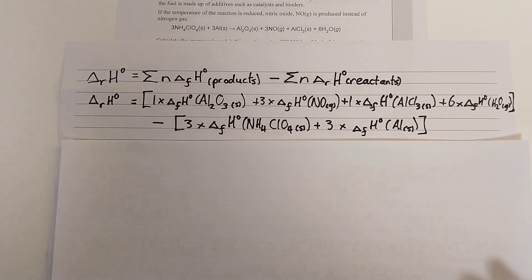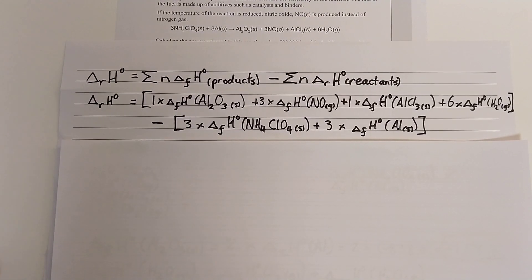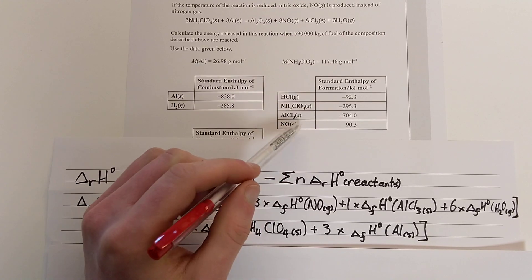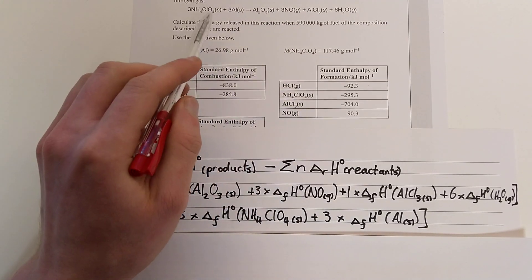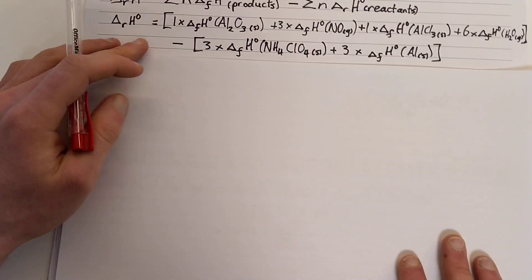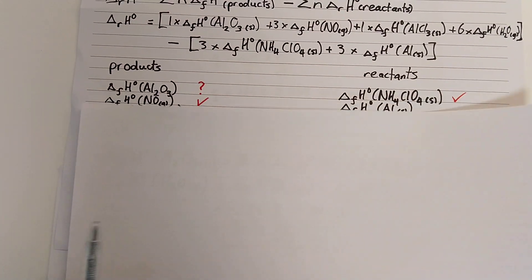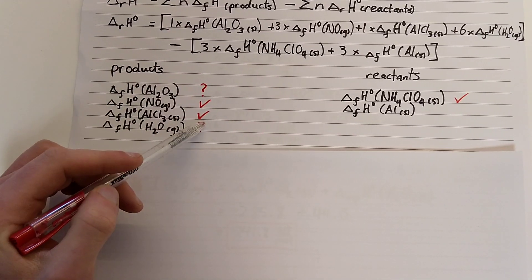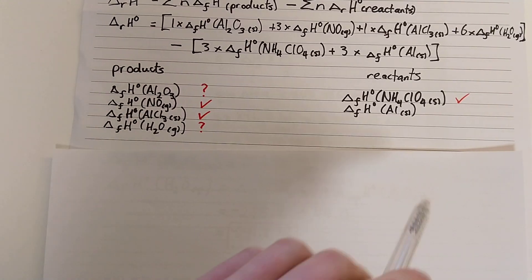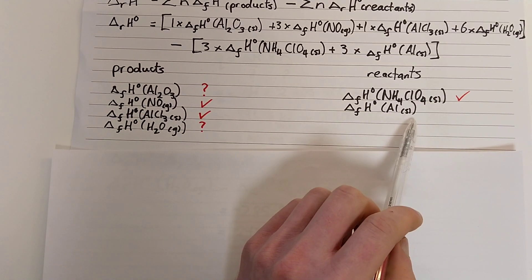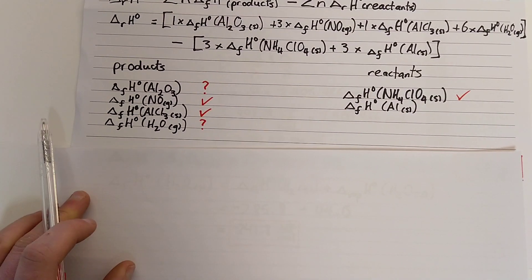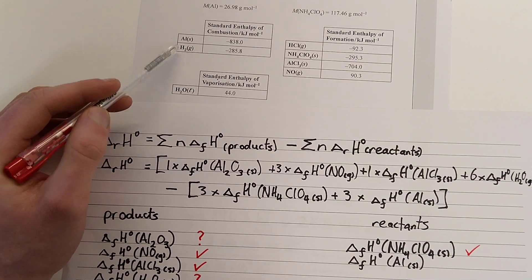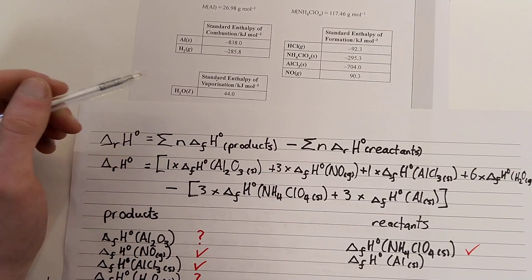I've written my equation in terms of variables. Now let's see what values we've actually got, because this question only gives us a few standard enthalpies of formation — we don't have all of them for every reactant and product. For reactants and products, they've given us the values for nitrogen monoxide and aluminium chloride. We're missing two enthalpies of formation for two of our products, and we know the value for ammonium perchlorate but not for aluminium. However, they've given us the standard enthalpies of combustion for a couple of things and the standard enthalpy of vaporization for water.